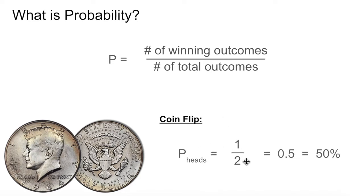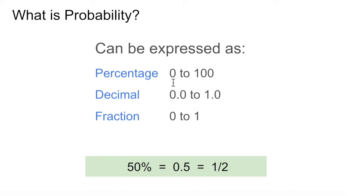We can write that as one-half, or as a decimal: 0.5 is the decimal equivalent of one-half. Or you can also write this as a percentage — 50% chance of flipping a heads. When you express it as a percentage, it's going to be between 0 and 100. A probability can never be less than 0 and can never be greater than 100. If 100%, it's guaranteed to happen. If 0%, there's no chance whatsoever. The decimal ranges between 0.0 and 1.0, and the fraction also ranges from 0 to 1. So 50% equals 0.5 equals one-half.